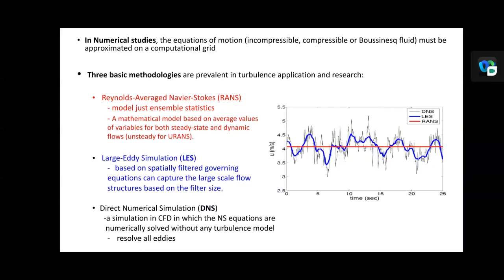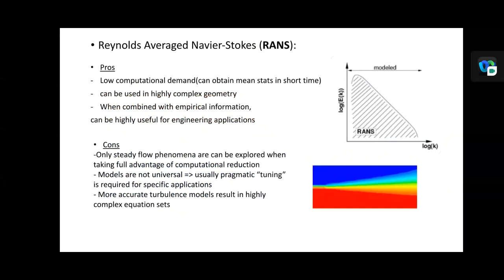For the pros and cons of RANS: pros include low computational demand, the ability to obtain mean state in short time, and usability in highly complex geometry. When combined with empirical information, it can be highly useful for engineering applications. Cons include that only steady flow phenomena can be explored when taking full advantage of computational reduction, and models are not universal — chromatic tuning is required for specific applications.